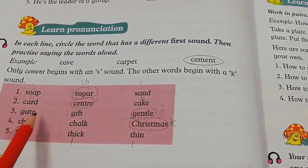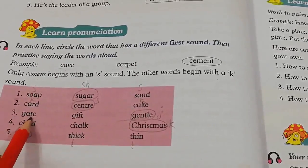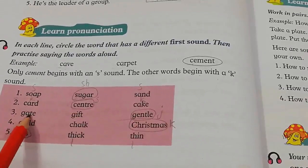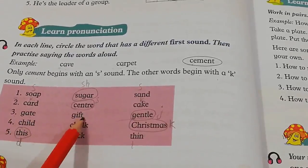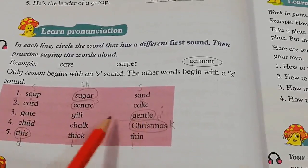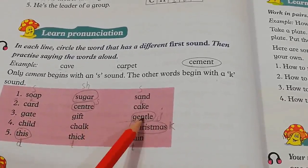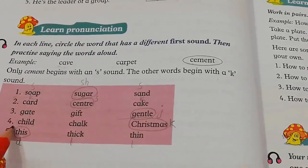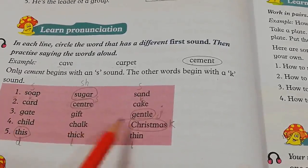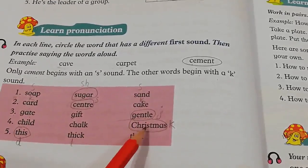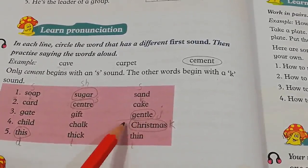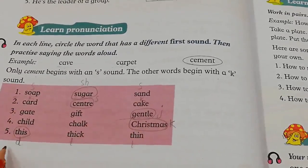The third one: Gate, Gift, Gentle. Gate and Gift are pronounced with a G sound, but Gentle starts with a J pronunciation. So we will circle Gentle. The fourth: Child, Chalk, Christmas. Child and Chalk start with a CH sound, but Christmas starts with a K pronunciation. So we will circle Christmas.